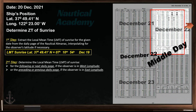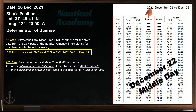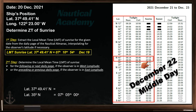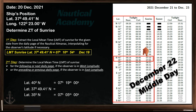Let's zoom in on this portion of the daily page. Again, we need to find the time of sunrise for this latitude, but it has no exact value here. So let's extract the time of sunrise at latitude 35 degrees north, which is 07 hours 05 minutes, and at latitude 40 degrees, the time of sunrise is 07 hours 19 minutes.